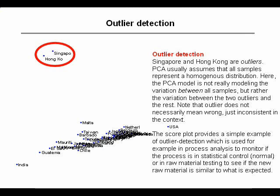In PCA, we often, though not always, assume that our samples come from a certain distribution — not necessarily an easily statistically described one, but at least that the samples are similar in nature. In this case, we can see that PCA is not really modeling the variation among all the samples, but rather modeling whether we have Singapore or Hong Kong or not. That's usually not what we want to do with PCA. We want to describe the common phenomena in the data, not individual peculiarities.